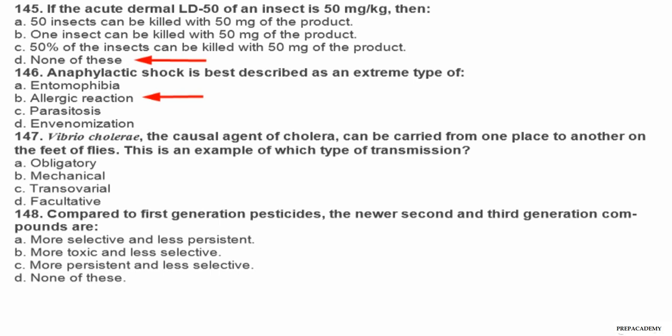Question 147. Vibrio cholerae, the causal agent of cholera, can be carried from one place to another on the feet of flies. This is an example of which type of transmission? Question 148. Compared to first generation pesticides, the newer second and third generation compounds are: A more selective and less persistent, B more toxic and less selective, D none of these.